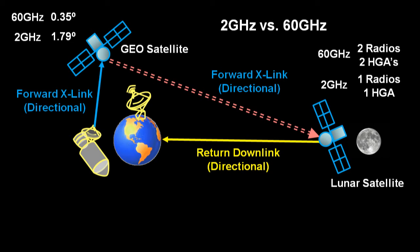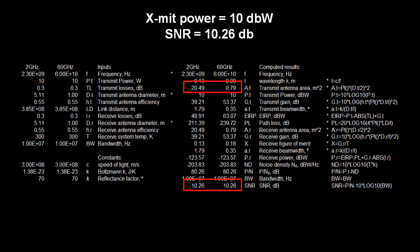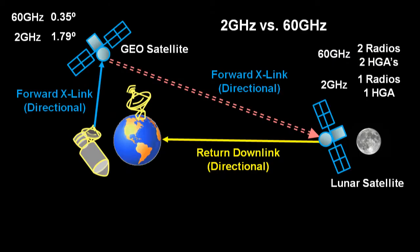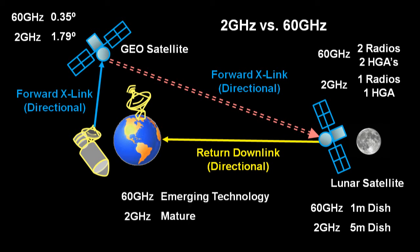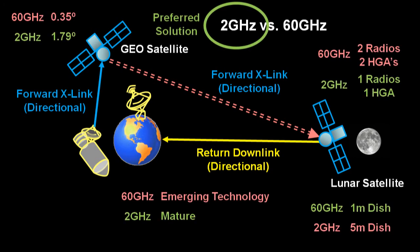The only real advantage the 60 gigahertz system would offer would be that to achieve the same gain at the same transmitting power as with the 2 gigahertz system, you could use a dish at only one-fifth the diameter. And since 60 gigahertz communications was essentially an emerging technology in the 60s — brand new — I would opt to use the time-tested 2 gigahertz equipment. Why mess around with cutting-edge technology when you have something proven that will do the job with less risk and at less cost? It doesn't make sense, does it?